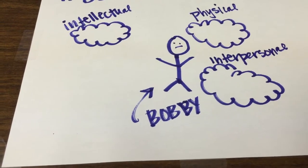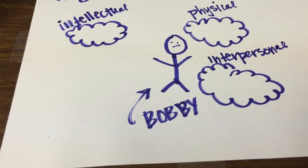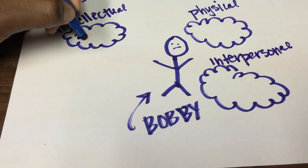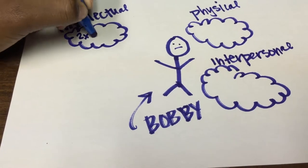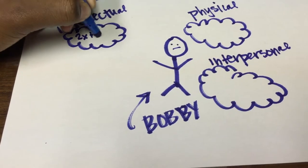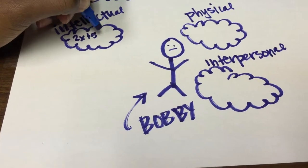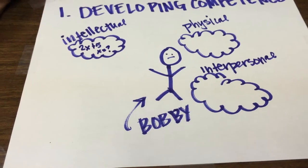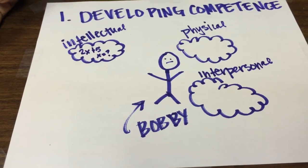On an intellectual level, Bobby can improve just by gaining knowledge of the fraternity, by going to class, starting to get exposed to what classes are in his major, etc.